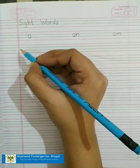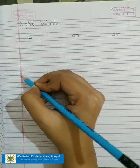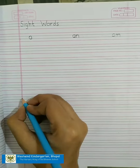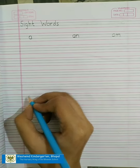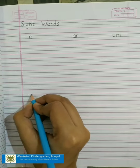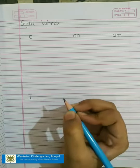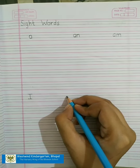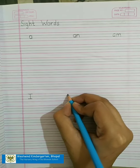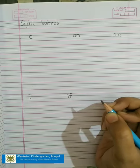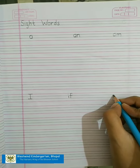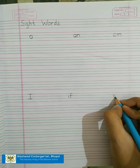Now leave four lines. One, two, three, four. Now here we will write the sight words which are left. First we will write I. Okay? Then we will write IF. I, F, IF. Then, I, N, N.